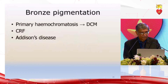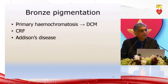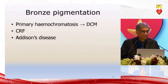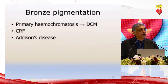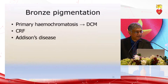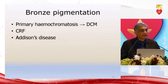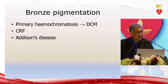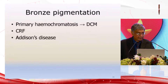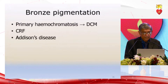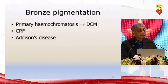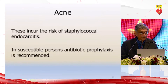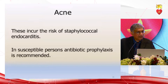Coming to the skin: general pigmentation — bronze pigmentation — is important to note. The patient has a muddy complexion like muddy water. Bronze pigmentation indicates primary hemochromatosis, associated with dilated cardiomyopathy; it is also seen in chronic renal failure and in Addison's disease. The pigmentation of the skin indicates that there is underlying heart disease.